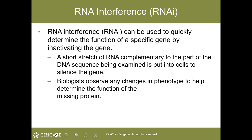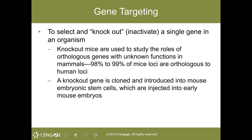Genome analysis of commercially important organisms is a priority. With gene targeting, you can knock out a gene and use knockout mice to study the roles of orthologous genes with unknown functions. The knockout gene is cloned, introduced into mouse stem cells, and injected into the mice.